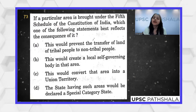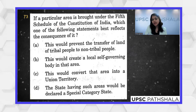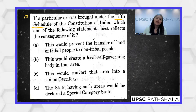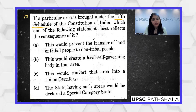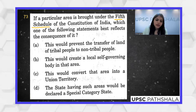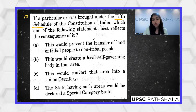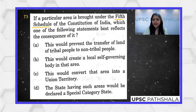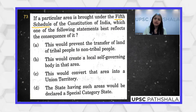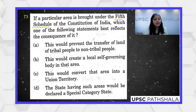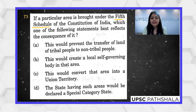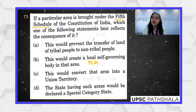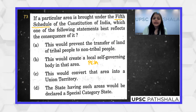A particular area is brought under the Fifth Schedule of the Constitution of India — which statement best reflects the consequences? The Fifth Schedule protects tribal rights, except for four states covered under the Sixth Schedule. Option A — it would prevent the transfer of land of tribal people to non-tribal people — could be correct. Option B about local self-governing bodies is more nuanced, as those bodies were specifically extended through the PESA Act — Panchayat Extension to Scheduled Areas.